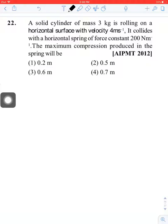A solid cylinder of mass 3 kg is rolling on a horizontal surface with velocity 4 meters per second. It collides with a horizontal spring of force constant 200 Newton per meter.